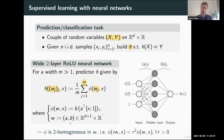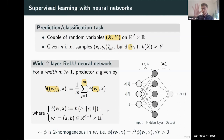One such property is that phi is 2-homogeneous in the parameters. This means that if I multiply the parameters of a hidden unit by some scalar r, then the output is multiplied by r squared — because both a and b are multiplied, and the ReLU non-linearity is also homogeneous.